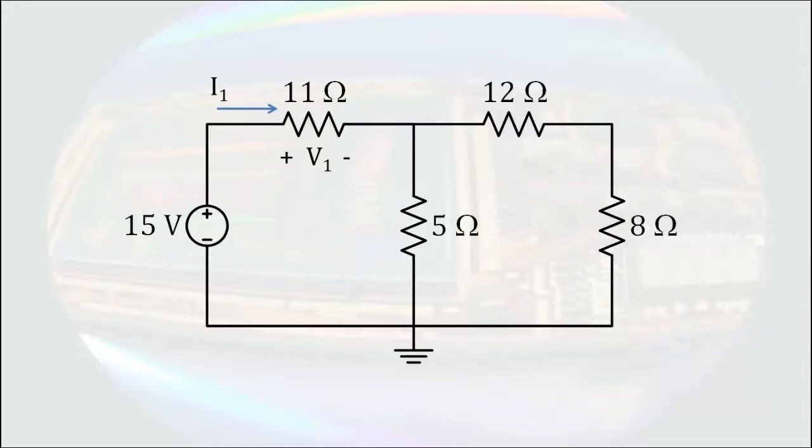If we define the voltage across the 5 ohm resistor as V2, then again, the current must enter the positive terminal of that voltage. The same is true for the voltage across the 12 ohm resistor and the current through it, and the voltage across the 8 ohm resistor and the current through it.